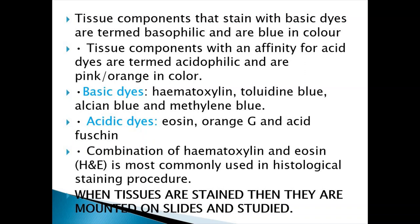Tissue components with an affinity for acidic dyes are called acidophilic and appear pink or orange. Examples of basic dyes include hematoxylin, toluidine blue, and methylene blue. Examples of acidic dyes include eosin, orange G, and acid fuchsin. The most commonly used stain in histology is H&E — a combination of hematoxylin and eosin.